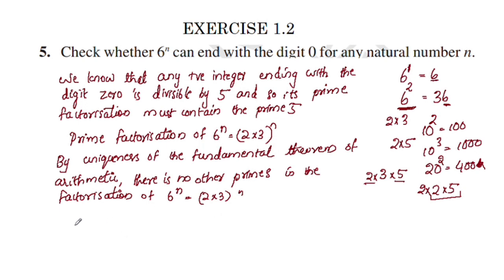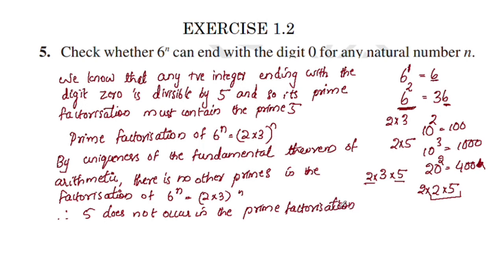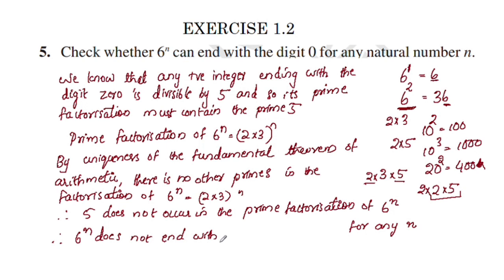Therefore, 5 does not occur in the prime factorization of 6 raised to n for any natural number n. Therefore, 6 raised to n does not end with the digit 0 for any natural number n.